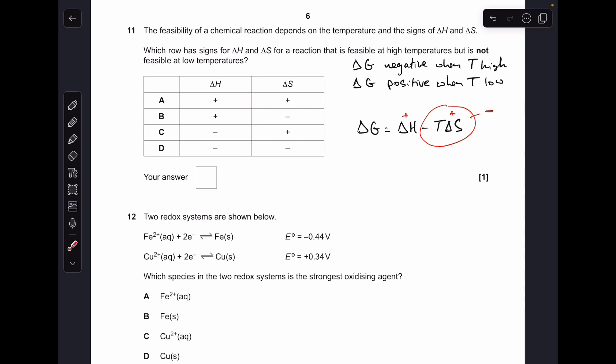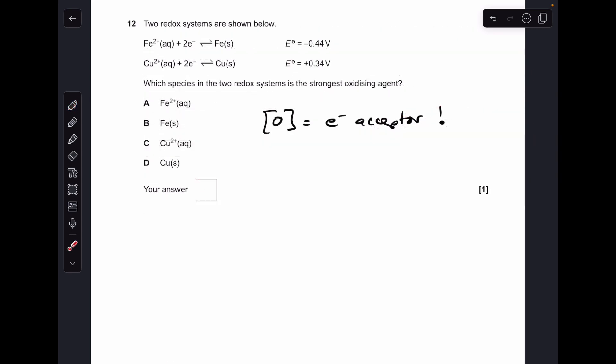So we're combining a positive term with a negative term. So if you think about it, as T increases in this term, it's going to make the overall delta G negative, so feasible at high temperature. But when T is low, this is a low negative number, and so the chances are delta H could outweigh and therefore make delta G positive. So that actually is the answer. So that was nice of the exam board.